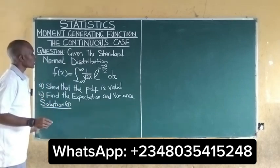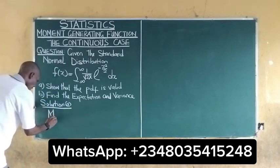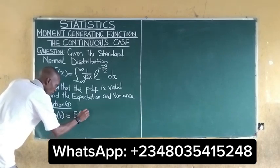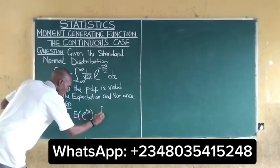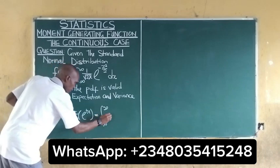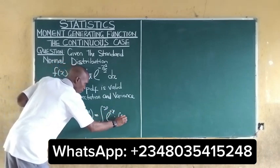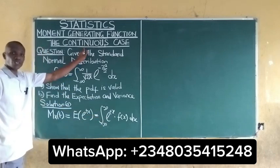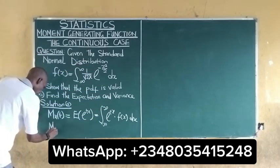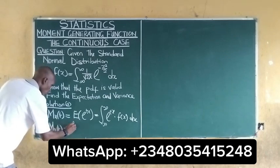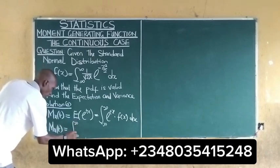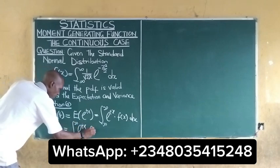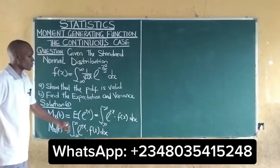We should recall that for the moment generating function, for the continuous case, we have that the moment generating function is equal to the integral of e^(tx) multiplied by f(x) dx. So we are using this integral form because it is a continuous case.